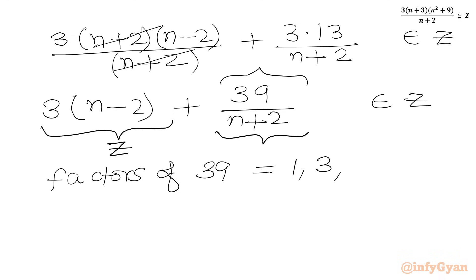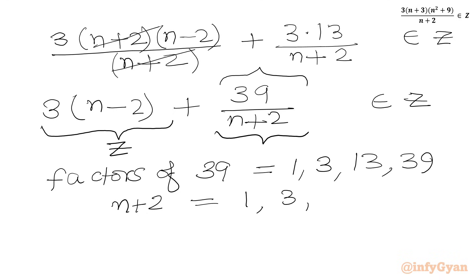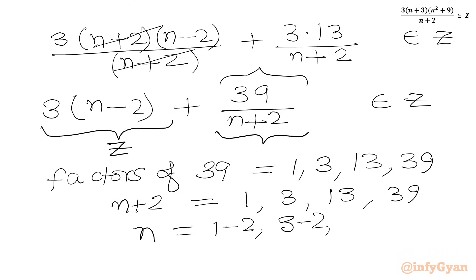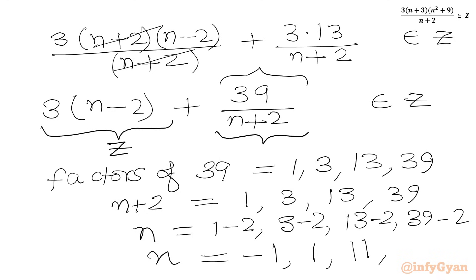The positive factors of 39 are 1, 3, 13, and 39. For 39 over (n+2) to be an integer, (n+2) must equal one of these factors. So n+2 equals 1, 3, 13, or 39, giving n equal to -1, 1, 11, or 37.